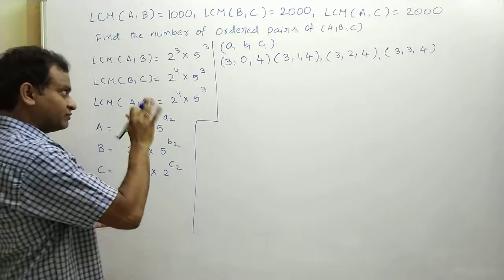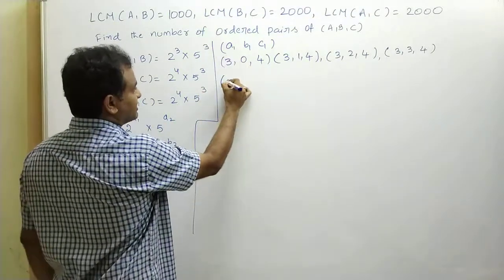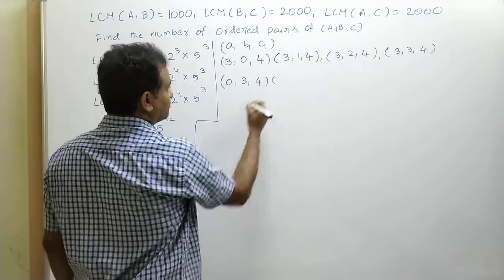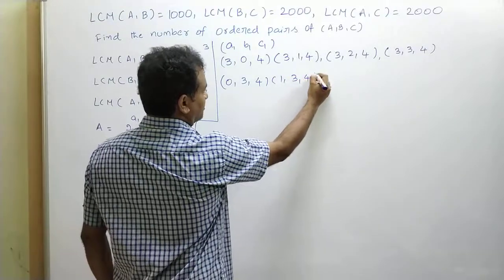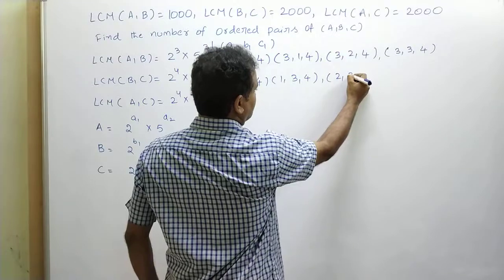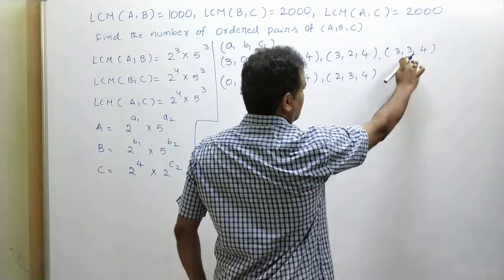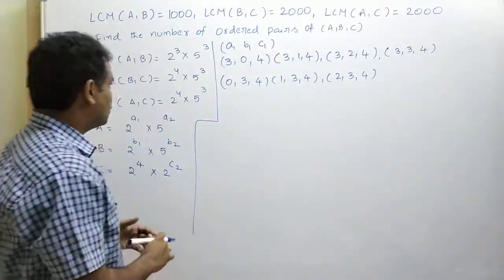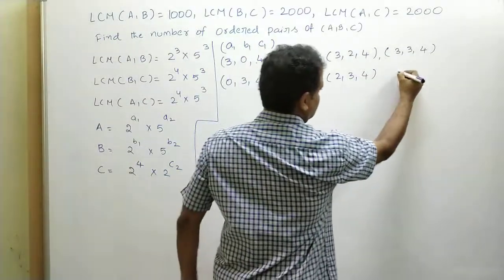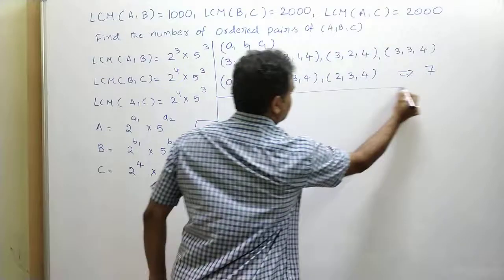We can also assume b1 = 3, in which case a1 can take values 0, 1, or 2 (not 3, since (3,3,4) was already counted). That gives ordered pairs (0,3,4), (1,3,4), (2,3,4) — three additional solutions. So total ordered pairs for (a1, b1, c1) is 7.